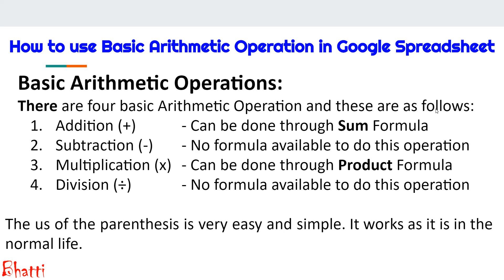There are four basic arithmetic operations: addition, subtraction, multiplication, and division. For addition and multiplication we have a formula, but for subtraction and division there is no formula — we will use the direct operator for the arithmetic operation.